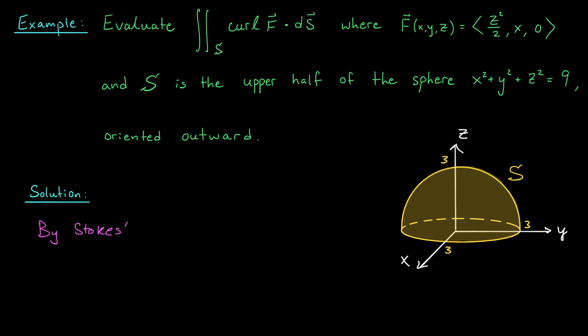for a line integral. We could instead compute the line integral along C of F · dr, where here C is this boundary curve, right? It's the edge of our surface. Now, if we're going to evaluate this line integral, we're going to need to know the orientation of C.